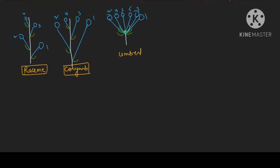So the first diagram is a typical raceme inflorescence. The second is a corymb, where lower flowers have elongated their pedicels. The third is an umbel inflorescence, where all flowers appear to come from one point. Here the bracts have made one whorl, which is known as an involucre — so involucre means a whorl of bracts.